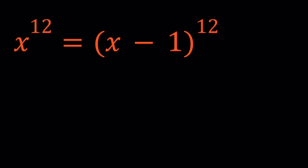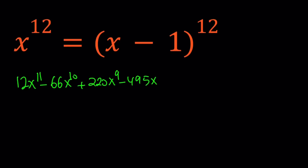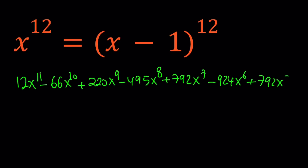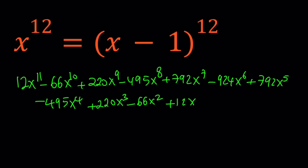When you expand it completely and cancel out the x to the power 12, you get: 12x to the power 11 minus 66x to the power 10 plus 220x to the ninth minus 495x to the eighth plus 792x to the seventh minus 924x to the sixth plus 792x to the fifth minus 495x to the fourth plus 220x to the third minus 66x squared plus 12x minus 1 equals 0.